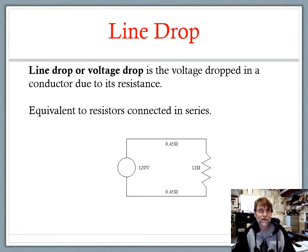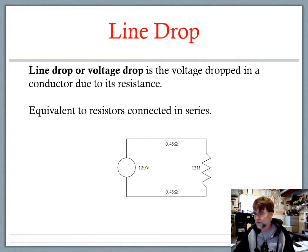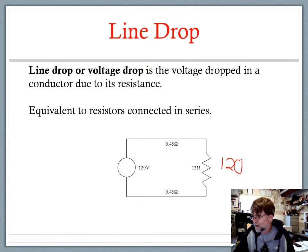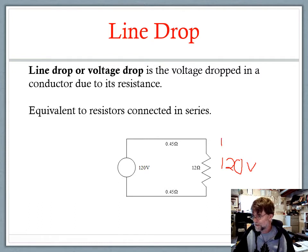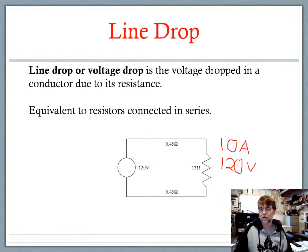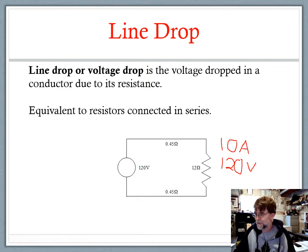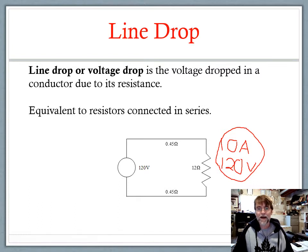First, let's go way back to the beginning and pretend there's no resistance in the wire. If we do the math, we have 120 volts divided by 12 ohms of resistance, meaning we've got 10 amps flowing through our circuit. Now, these numbers are no longer correct because they ignore the fact that there's any resistance in the wire. Once we introduce the resistance in the wire, we have to include those numbers.